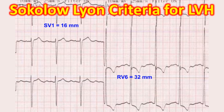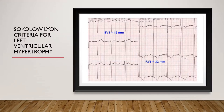Sokolov-Lyand criteria is one of the most popular voltage criteria for detection of left ventricular hypertrophy. In this ECG, we can see leads V1 to V6. The S wave in V1 is 16 mm and the R wave in V6 is 32 mm.